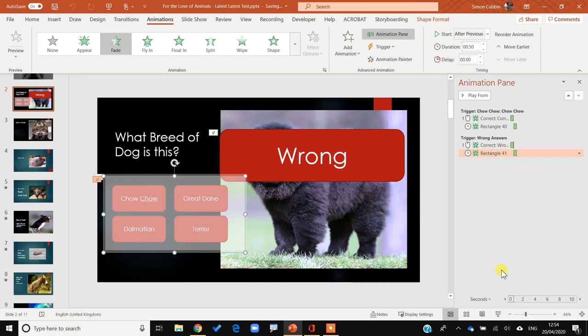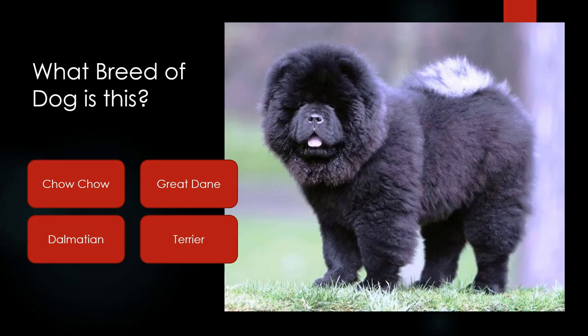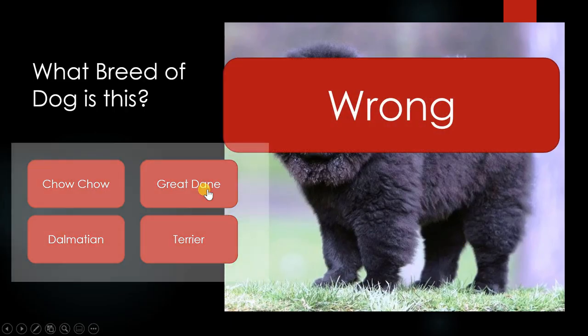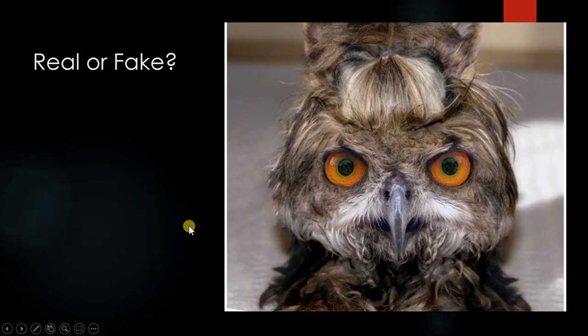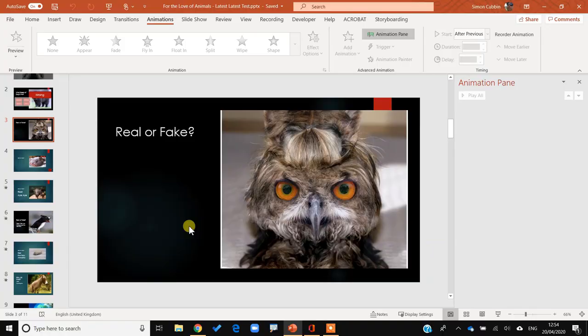Let's test it: I click Great Dane — it shows 'wrong' and the overlay comes in, so I can't go back and make another choice. I have to continue. So far so good, all looking hunky-dory.